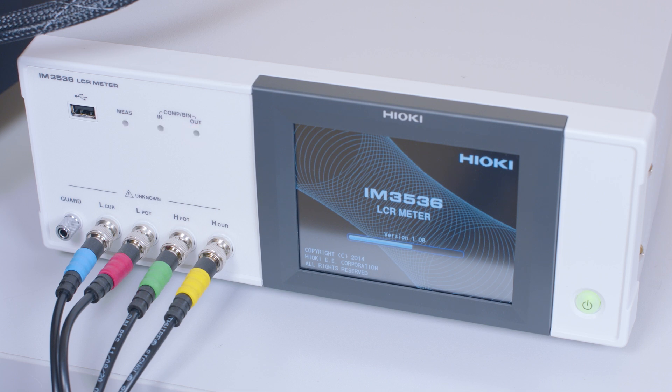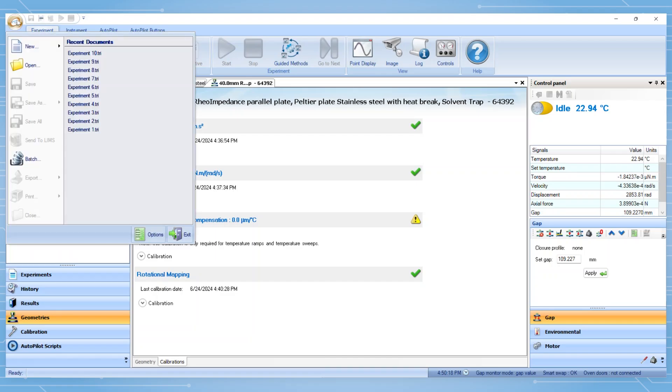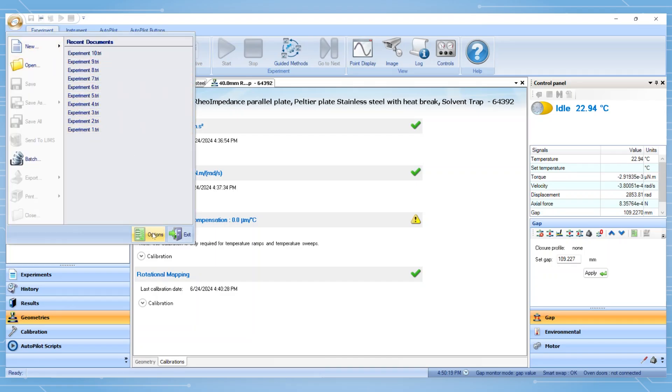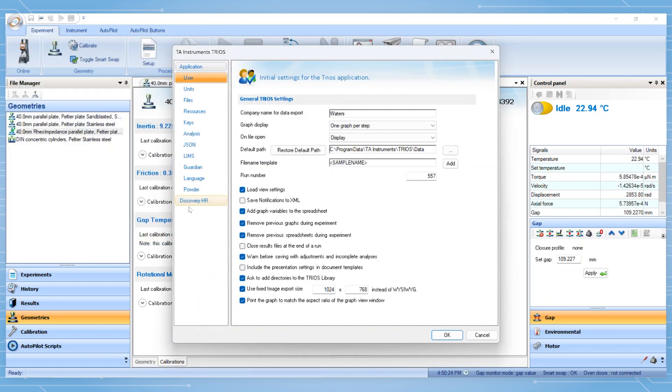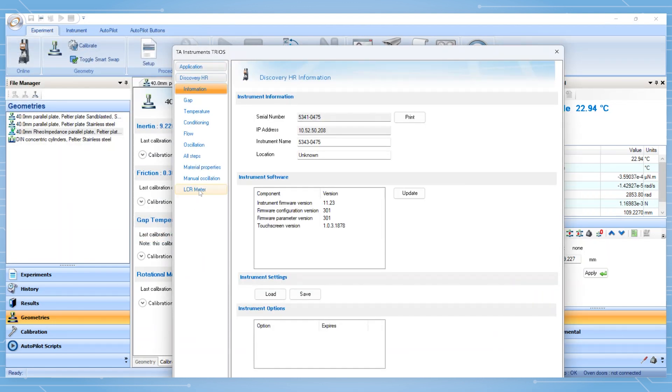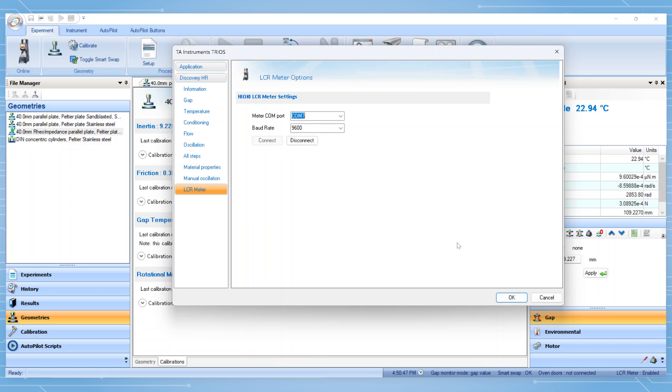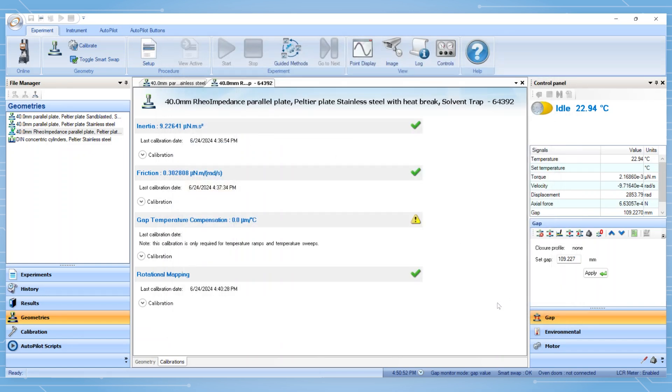If using a Hiyoki meter, go to Options in TRIOS, select the Discovery HR tab, then go to LCR meter. Select the COM port for the LCR meter and click Connect. If the connection was successful, the disconnect button will become active and the text at the bottom right of TRIOS will say LCR meter enabled. Click OK. Please note that COM port assignments may be monitored using the Windows Device Manager.